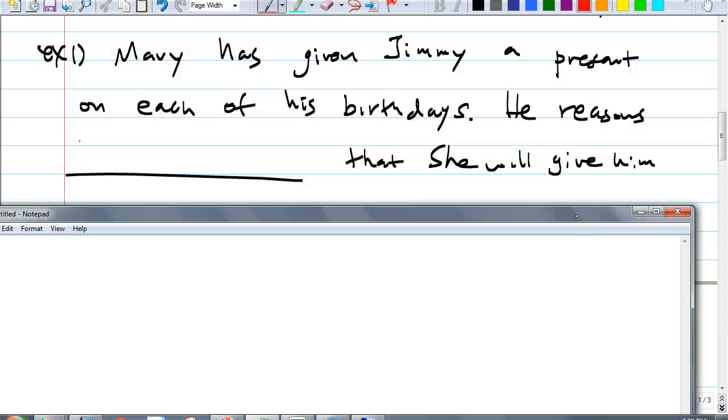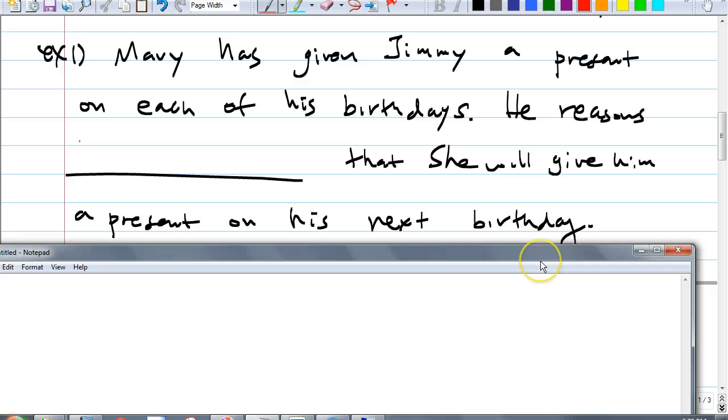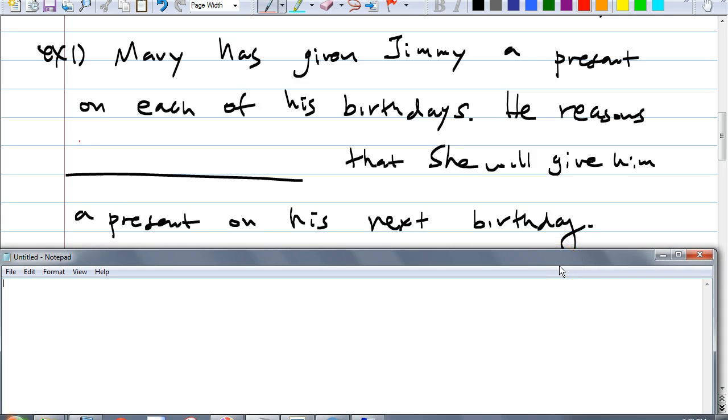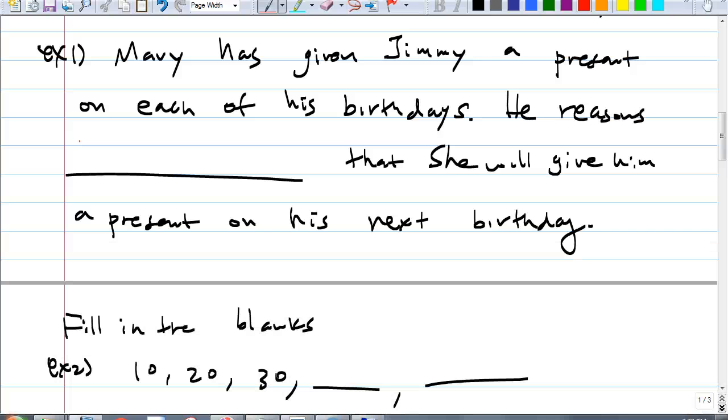Then why don't you fill in this blank for this example one. Mary has given Jimmy a present on each of his birthdays. He reasons blank that she will give him a present on his next birthday. So what do you think goes in there? So fill in the blank. Okay, who thinks they know what to fill in there? How about Grace, what do you think? Inductively. How many people wrote down inductively, right? How many people wrote down something else? What did you put? Based on past experience. Okay good, anybody else? But then if you said that, isn't that sort of inductive reasoning? Okay so that's what I was looking for, that's fine. But if you wrote down based on past experience, that means inductively, right? Okay, is that okay?